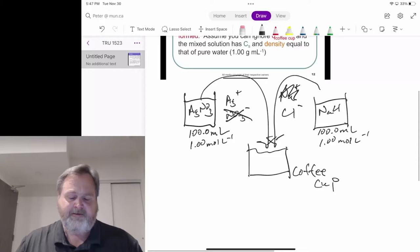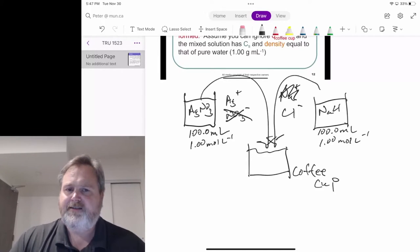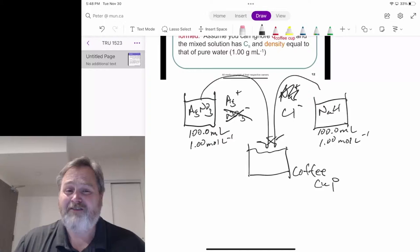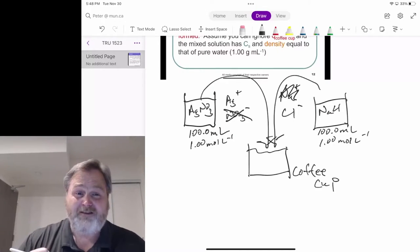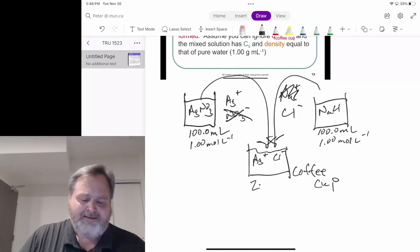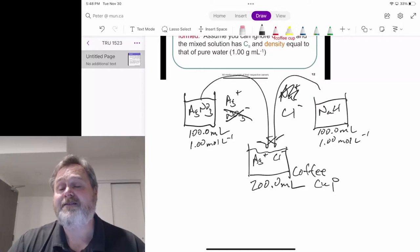There are a few things we have to realize. We're mixing two solutions together, which means at the end we have a solution that contains Ag+ ions and Cl- ions, but that solution is going to have a volume of 200 milliliters because we've added two separate 100 milliliter solutions together.